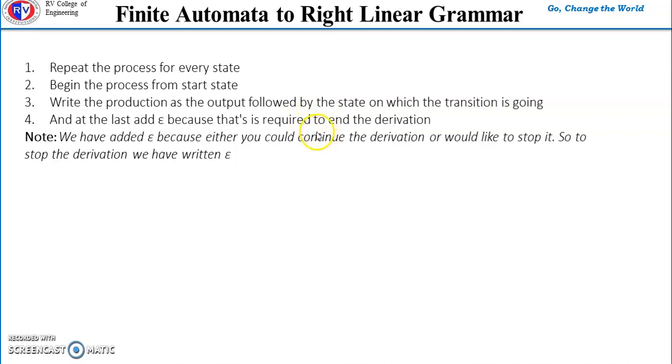Epsilon is required to end the derivation. We add epsilon because we can continue the derivation or we can stop it. To stop the derivation, we write epsilon, and this epsilon we add for the final state.